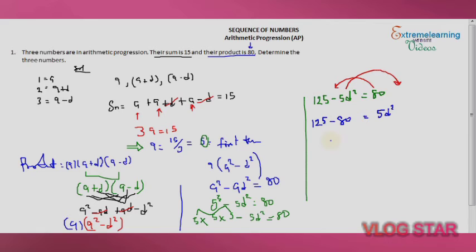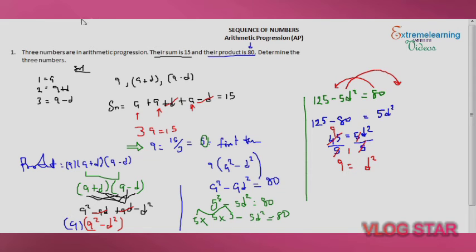125 minus 80 is 45, so 45 equals 5 d squared. Dividing both sides by 5 gives d squared equals 9. Taking the square root of both sides, the square root of 9 is 3, so d equals 3. We've now found both the first term a equals 5 and the common difference d equals 3.